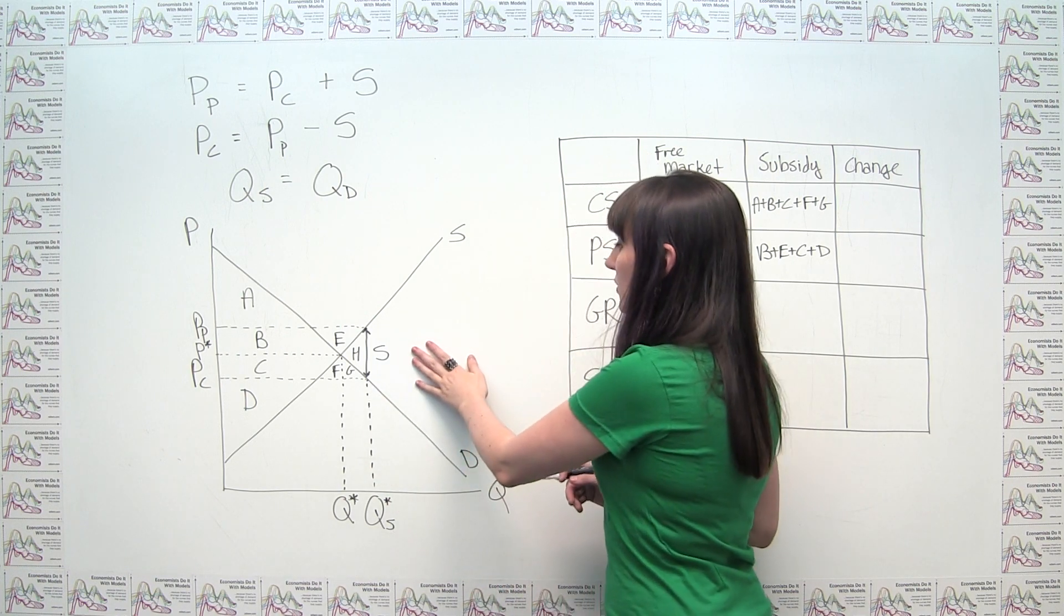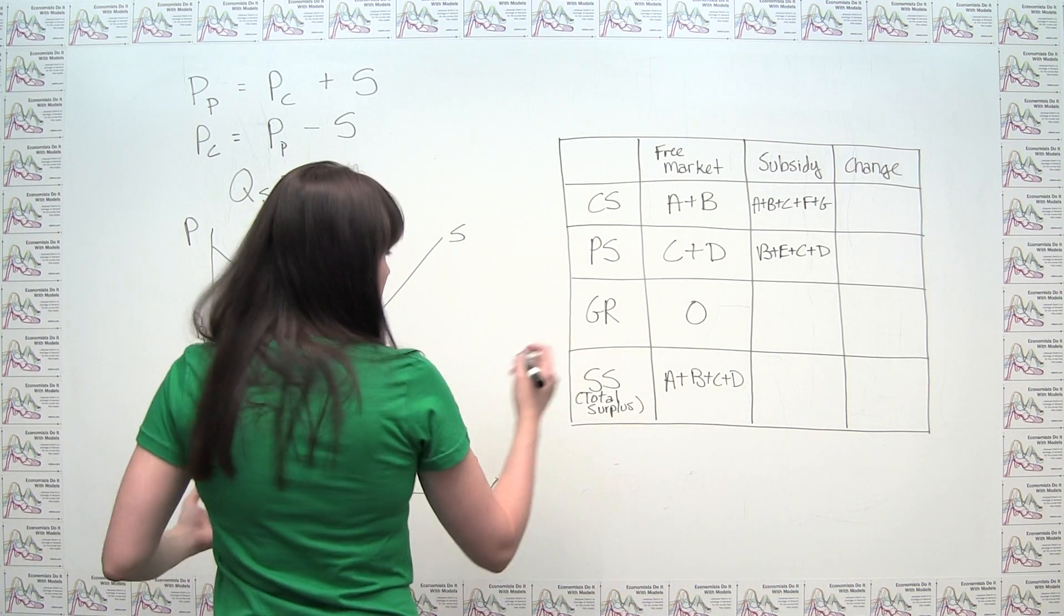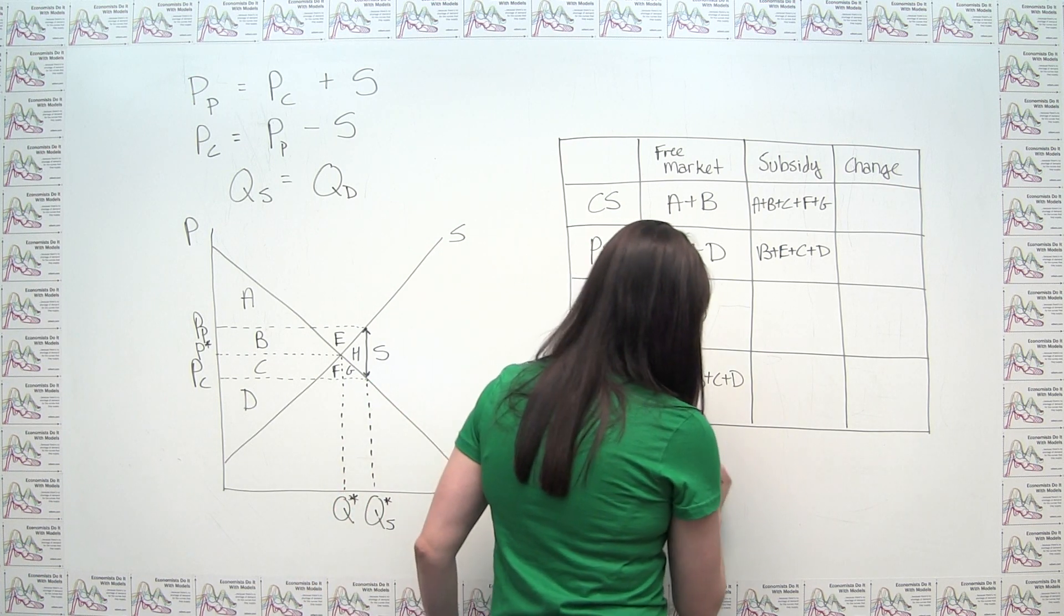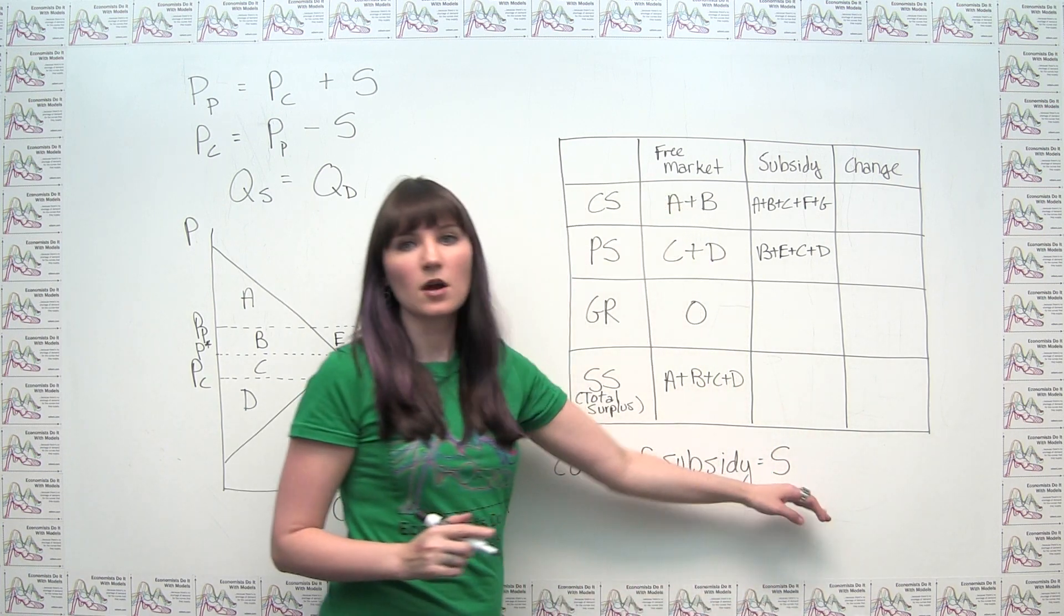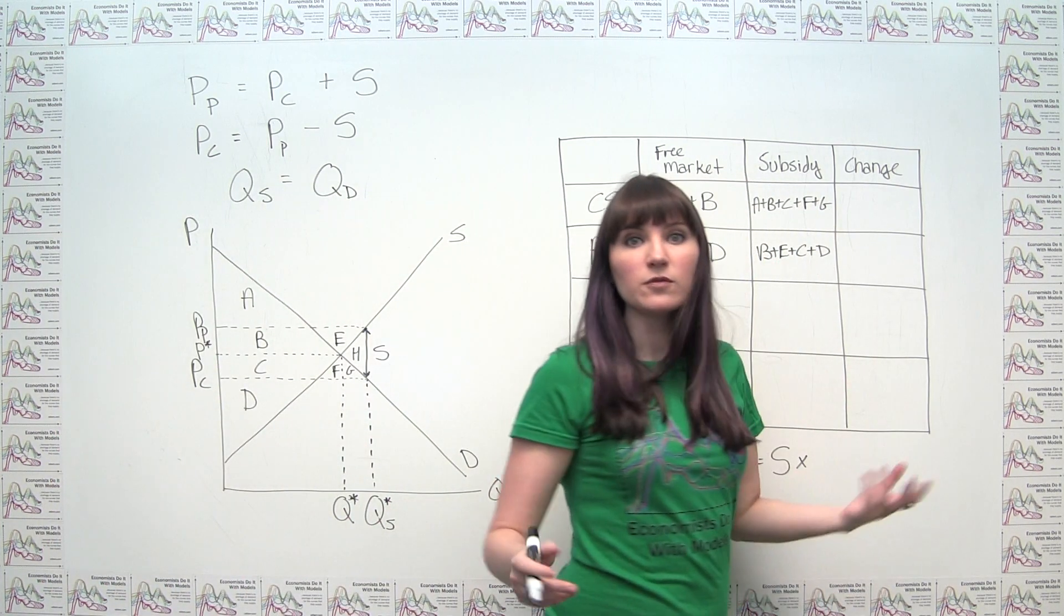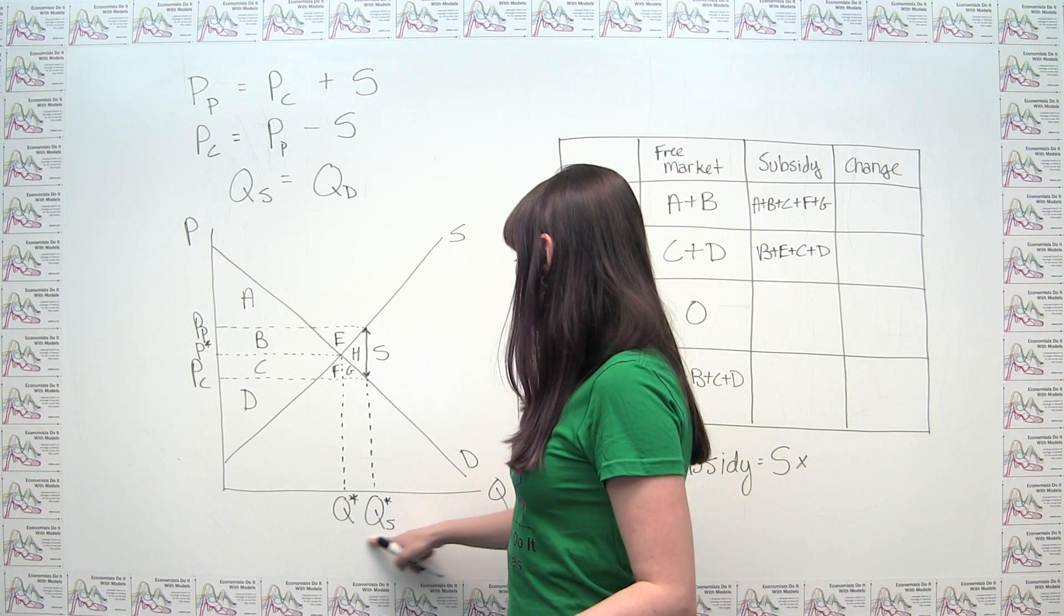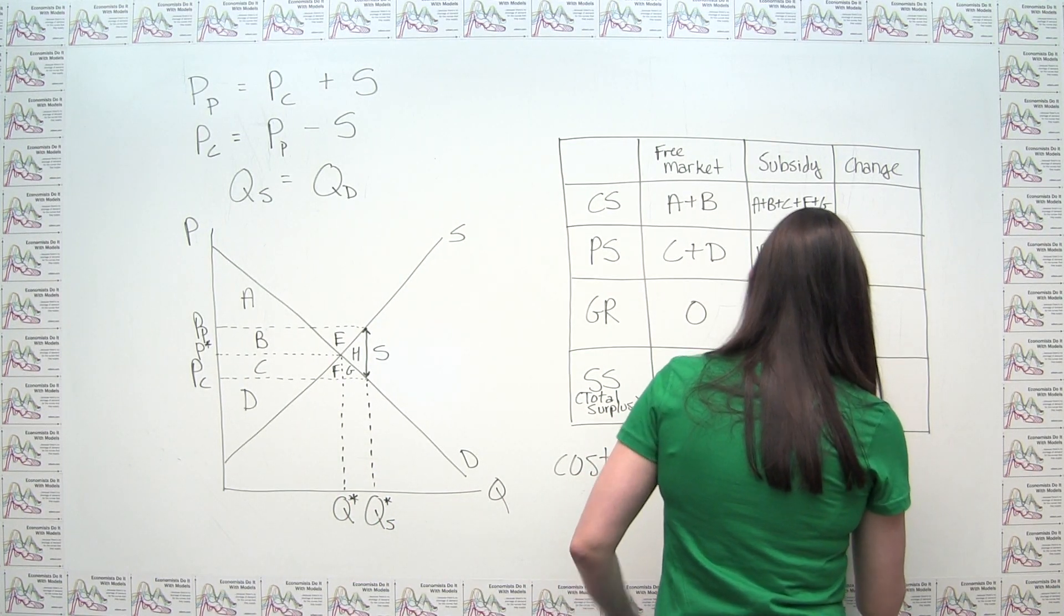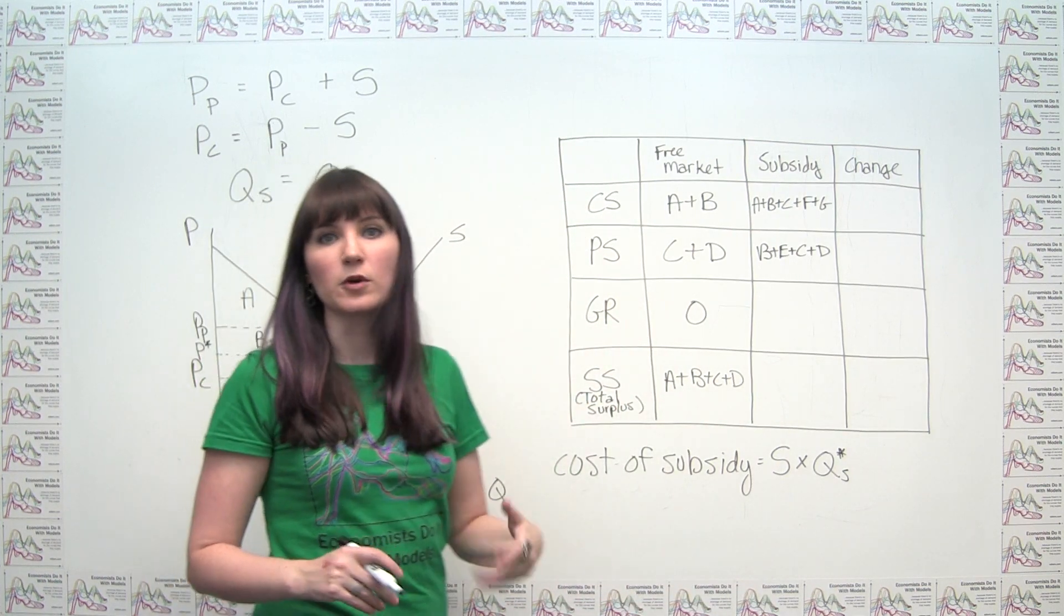So now, if we think about not the revenue from the subsidy, but the cost of the subsidy, we could say that the cost of the subsidy in total, rather than per unit, is just the per unit cost of the subsidy, which we labeled as S, times the number of units that are being bought and sold once the subsidy is put in place, which is just this Q sub S star. So we can say we have a reasonable measure for the cost of the subsidy, but how does that impact our calculation for government revenue?